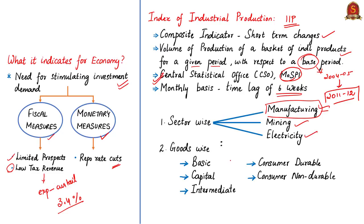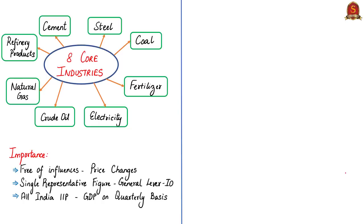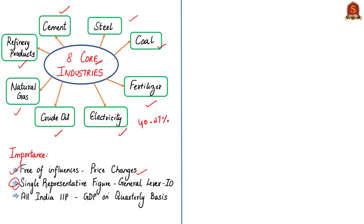IIP takes into account the following types of goods: basic goods, capital goods, intermediate goods, consumer durables and non-durable goods. The following are the eight core industries of IIP — they are considered core because they impact every economic activity and serve as a backbone of all other industries. The eight core industries constitute 40.27% of the total index of industrial production. The All India IIP provides a representative figure to measure the general level of industrial activity in the economy on a monthly basis. It is free of any influences like price changes.